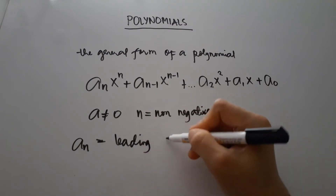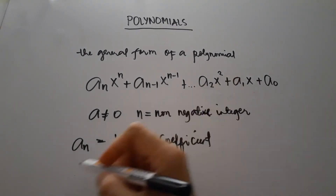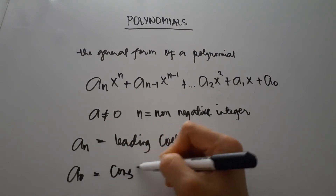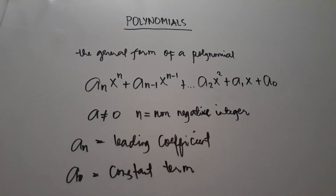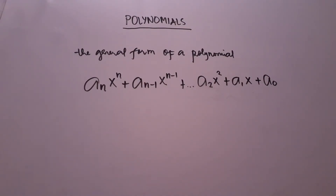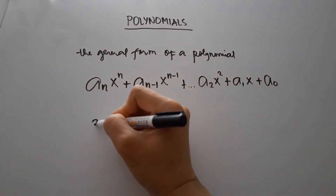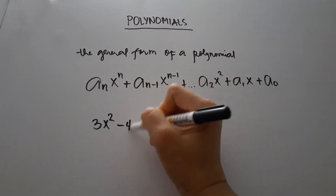Here, a sub n is the leading coefficient and a sub 0 is the constant term. If a polynomial in the variable x is written with decreasing powers of x, then it is in standard form.